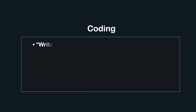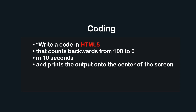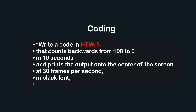ChatGPT can write code for you and help you understand it. Check this out: write a code in HTML5 that counts backwards from 100 to 0 in 10 seconds, printing the output at the center of the screen at 30 frames per second in black font, size 100.